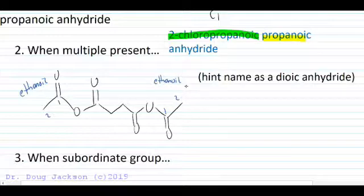And in the middle, we have our dioic acid derivative, one, two, and three. So that would be a propanedioic acid, if it were its carboxylic acid form.